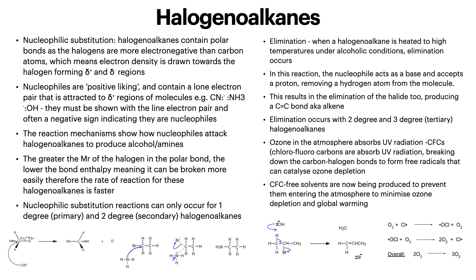Looking at halogenoalkanes — these can go through nucleophilic substitution. Halogenoalkanes contain polar bonds as halogens are more electronegative than carbon atoms, meaning electron density is drawn towards the halogen forming positive and negative regions. Nucleophiles are electron-pair donors attracted to positive regions of molecules, for example CN⁻. The reaction mechanism shows how nucleophiles attack halogenoalkanes to produce alcohols or amines. The greater the MR of the halogen, the lower the bond enthalpy, meaning it can be broken more easily, so the rate of reaction is faster.